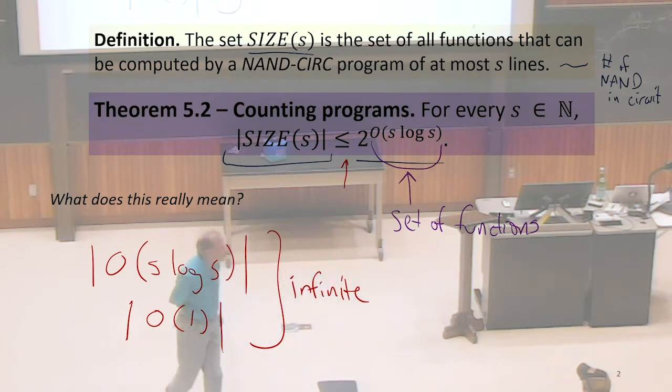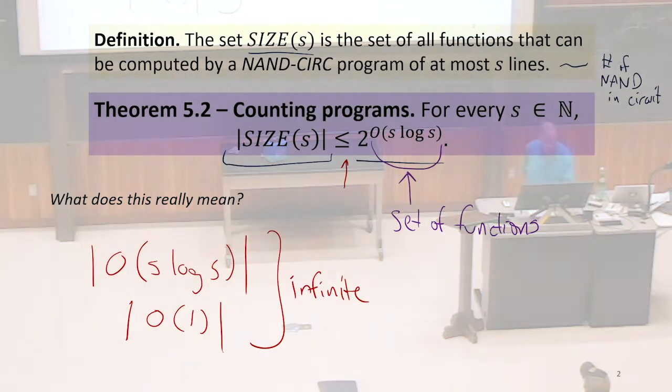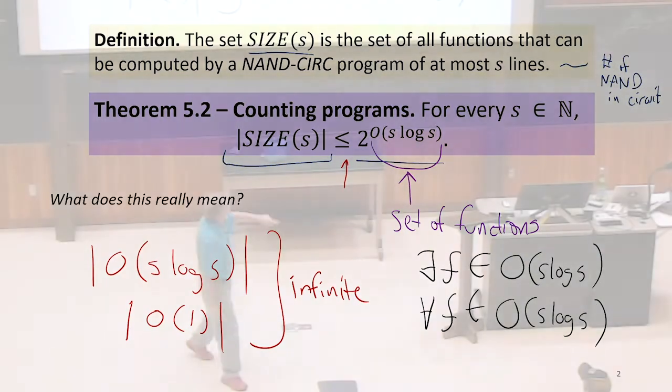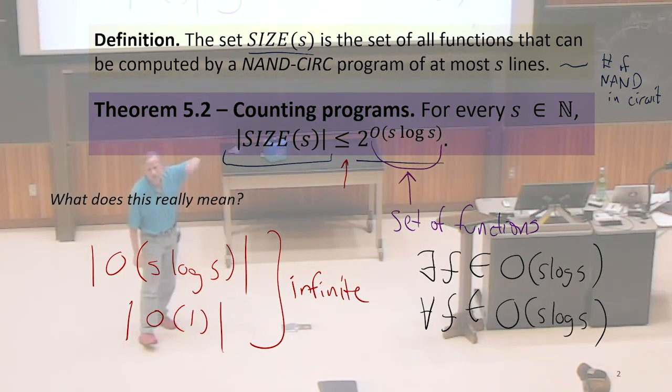Yeah, so there's got to be some kind of hidden implication here that we're finding some function in this set. It could be something like this, or maybe it's a for all. Which one of these do we think it's going to be? Which one of these two should it be? Should it be there exists some function in that set, or for all functions in that set?